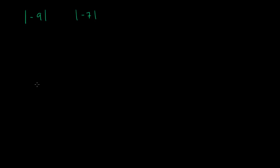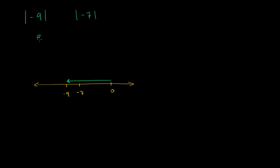There are a couple of ways to think about it. One is you can draw them on the number line. So if this is 0, negative 7 is here, and negative 9 is right over here. When you take the absolute value of a number, you're really saying how far is that number from 0, whether it's to the left or to the right. Negative 9 is 9 to the left of 0, so the absolute value of negative 9 is exactly 9. Negative 7 is exactly 7 to the left of 0.